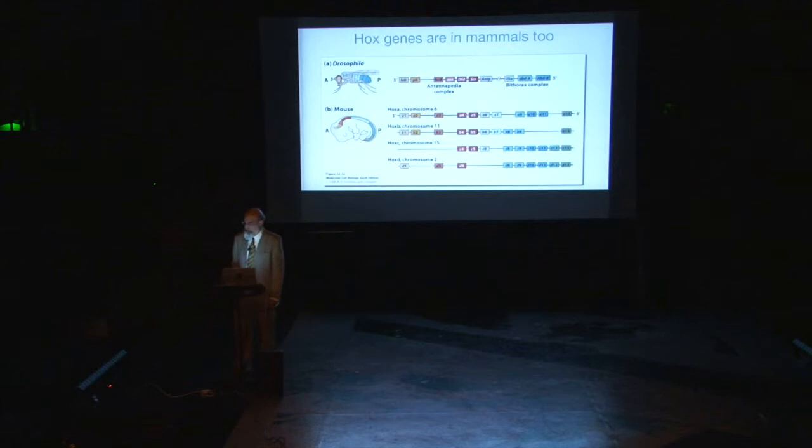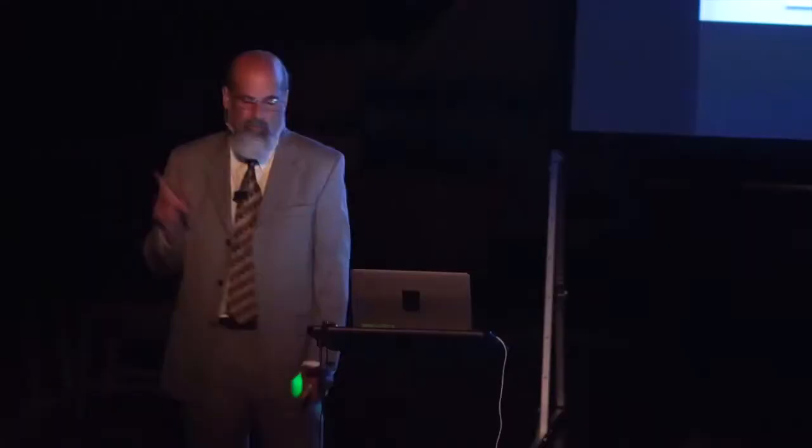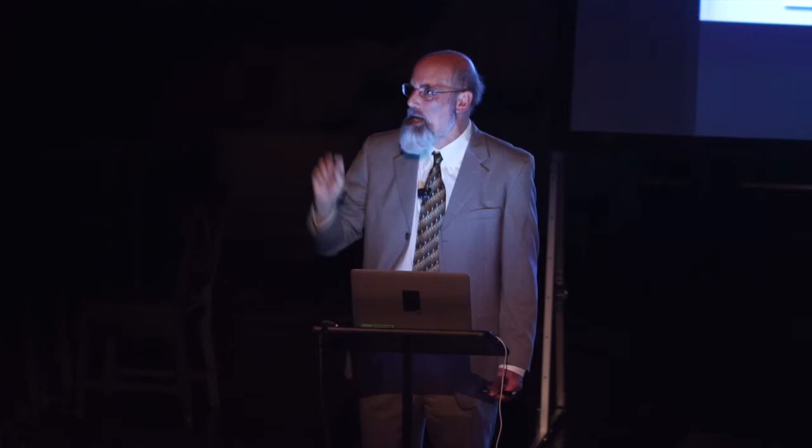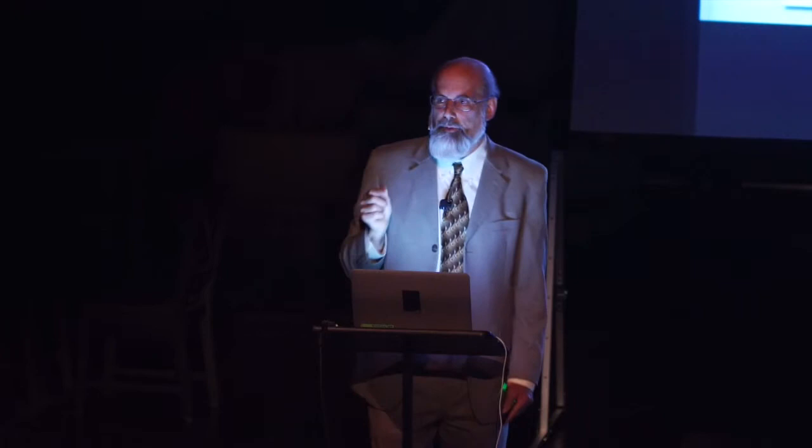What do these genes do in us? They don't put wings on any of our segments, even when you mutate them. They control all sorts of things: the pattern of your digits, the patterns of your toes, the difference between your digits and toes, the differences between your vertebrae, the differences between different parts of the brain, and differences in different parts of the skin. They form an informational map that directs differences in structure across the body, mostly — but not always — along this head-to-tail axis.